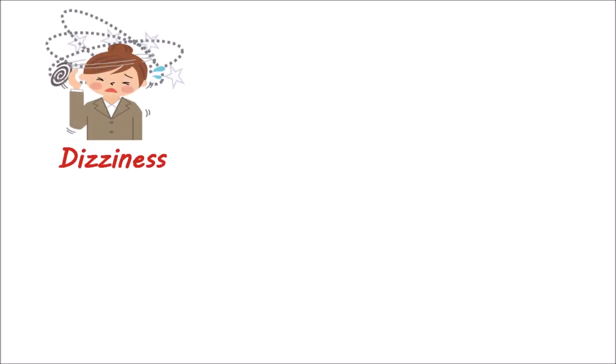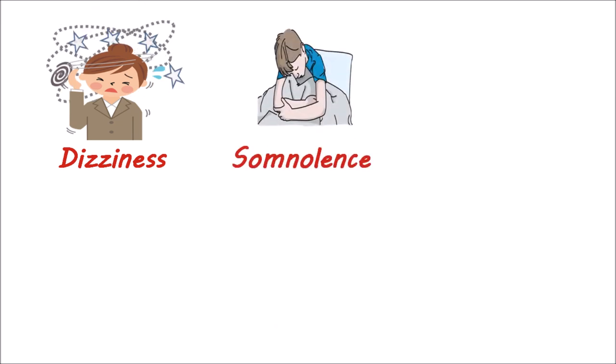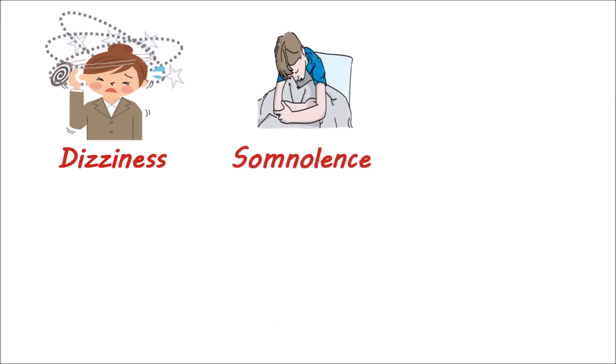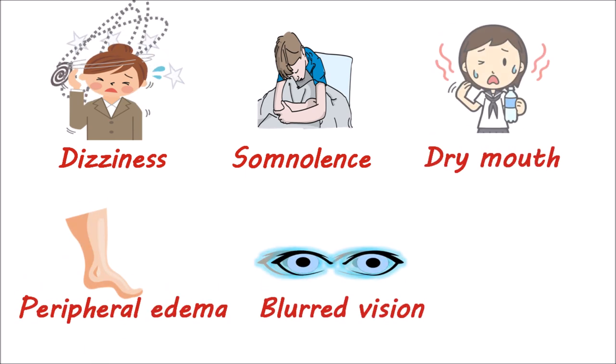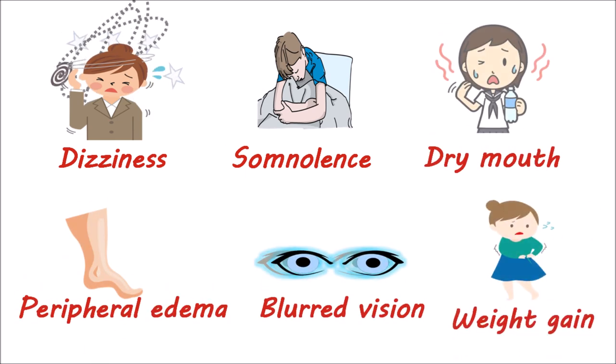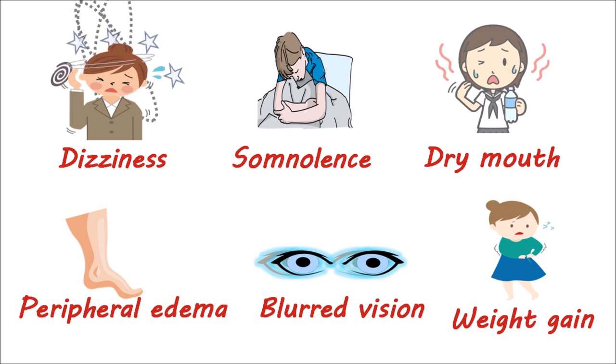Now let's discuss adverse effects of pregabalin. One of the most important side effects is dizziness. This drug can also produce somnolence, another important side effect. Other side effects mainly include dry mouth, peripheral edema, blurred vision, and weight gain. Pregabalin can also impair concentration and attention in patients, resulting in abnormal thinking.